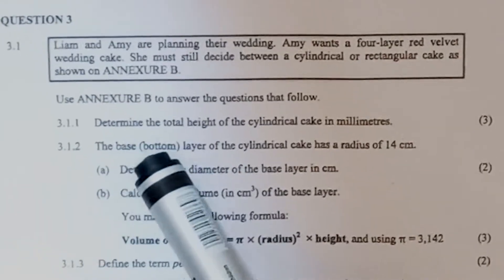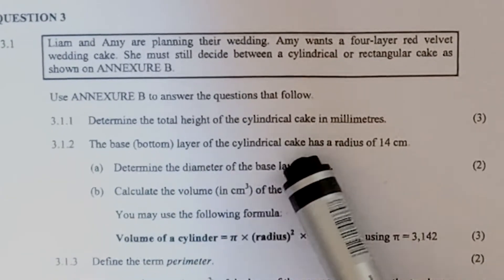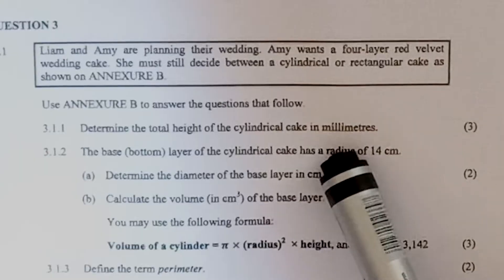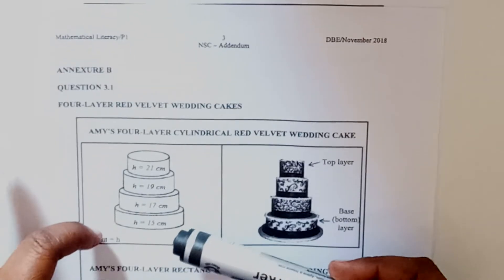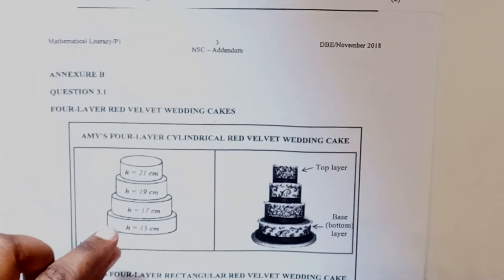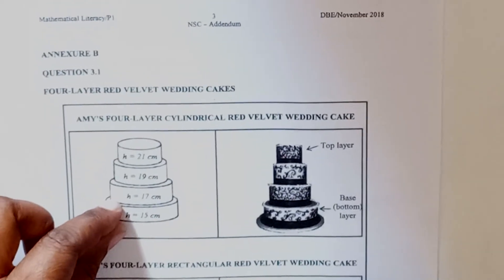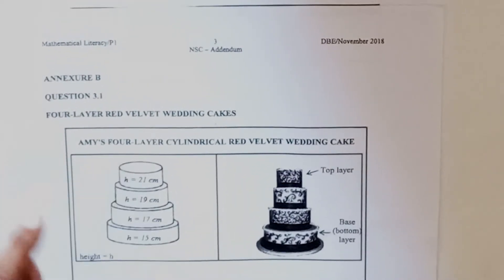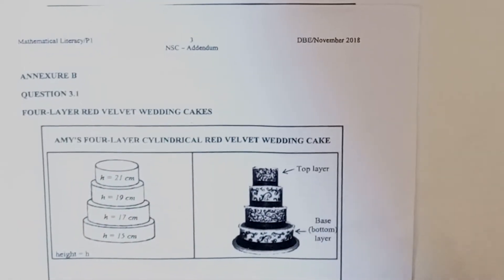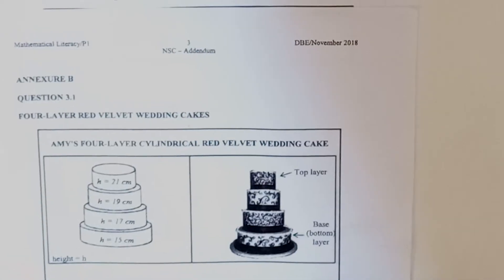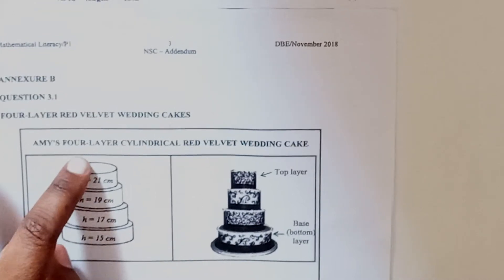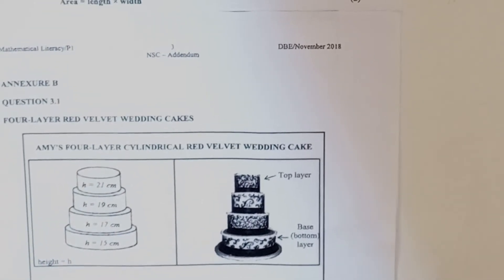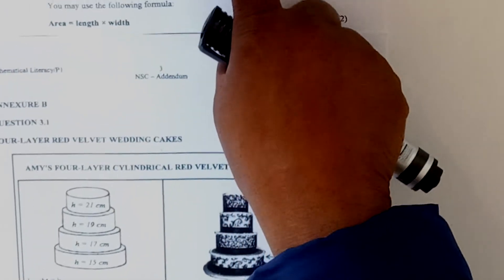Let's look at question 3.1.1: determine the total height of the cylindrical cake in millimeters. Let's go to the cylindrical shape. Each tier or layer has its own height, so to get the total it's logical that you add them. When you're using operations — adding, multiplying, subtracting, dividing — think for yourself what you need to do. Also note the question says your answer must be in millimeters.